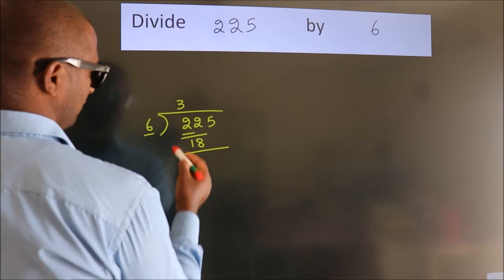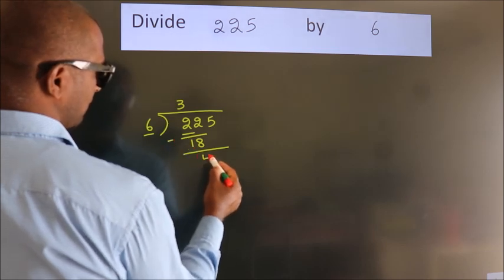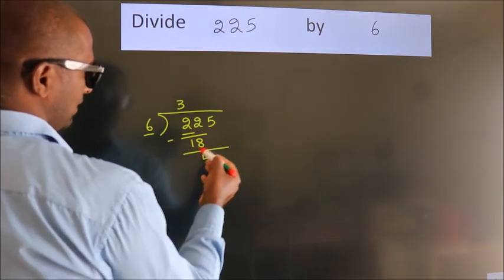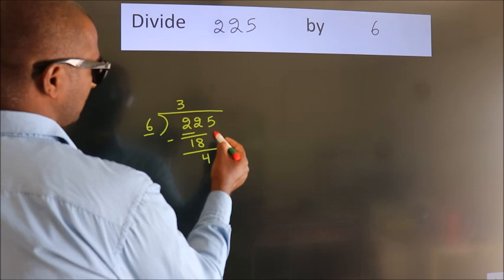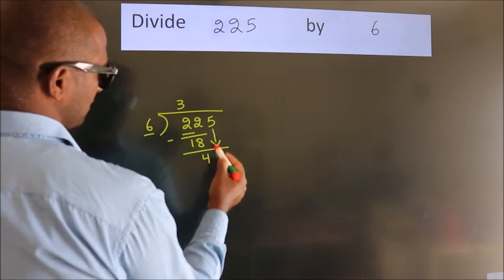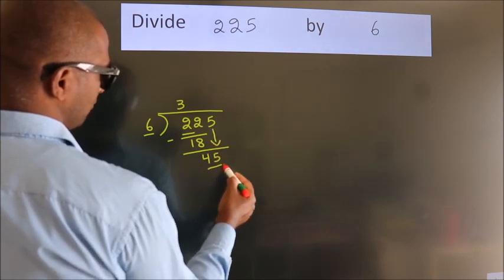Now we should subtract. We get 4. After this, bring down the beside number. So 5 down. So 45.